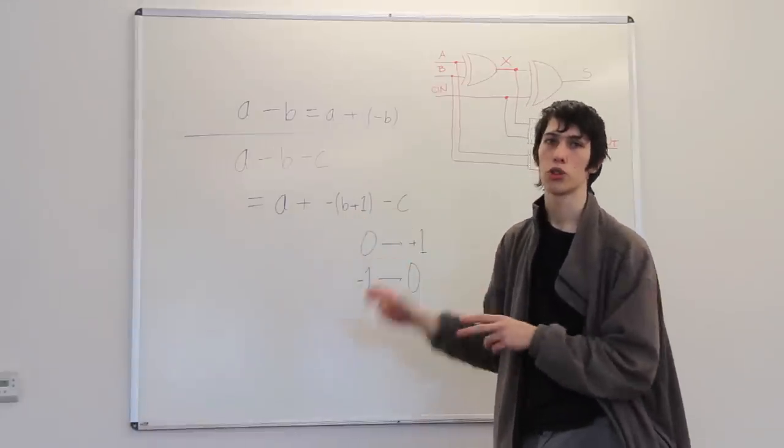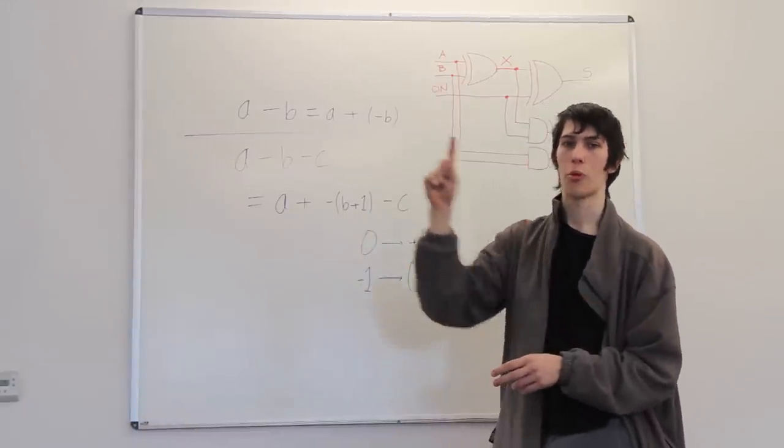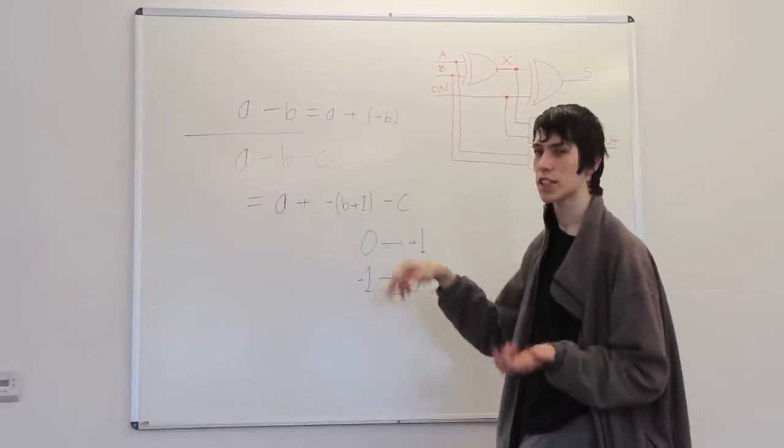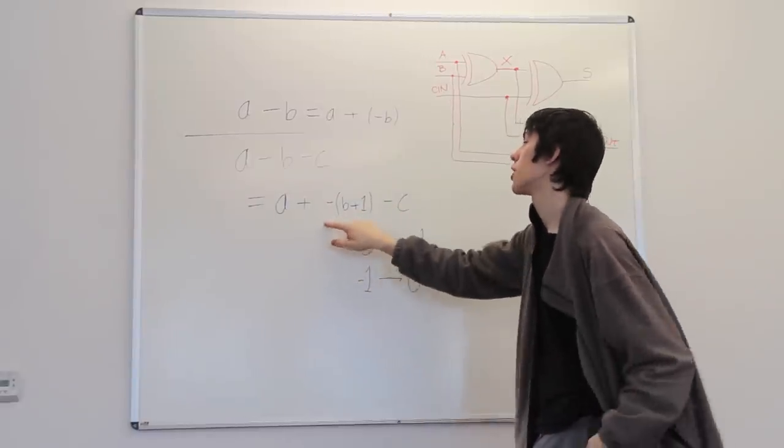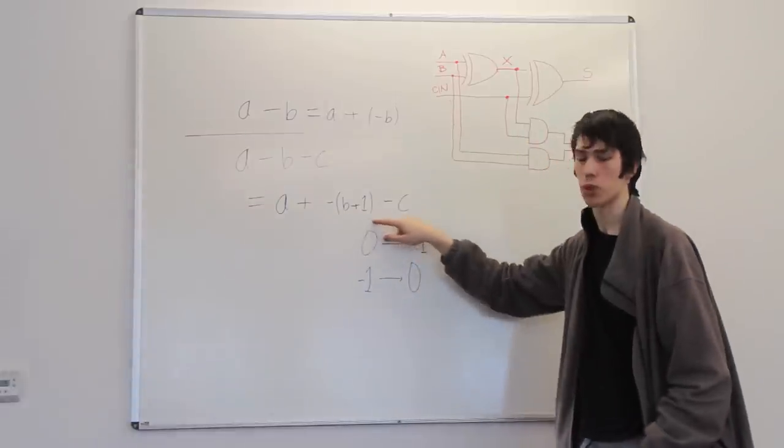So a 0, for example, goes to minus 1. So you get 1, 1, 1, 1, 1, 1. And whether it's positive or negative, luckily, you end up with the same thing. You end up with minus b plus 1.